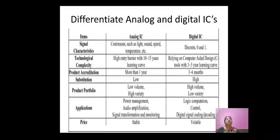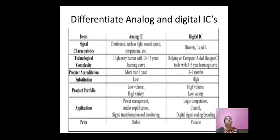Technical complexity: analog ICs have a high entry barrier with a 10 to 15 year learning curve, while digital ICs rely on computer-aided design (CAD) tools with a 3.3 to 5 year learning curve. Applications of analog ICs include power management, audio amplification, signal transformation, and monitoring; digital ICs are used for digital computation, logic computation, control, and digital signal coding and decoding. Price for analog ICs is stable, while for digital ICs it is volatile.